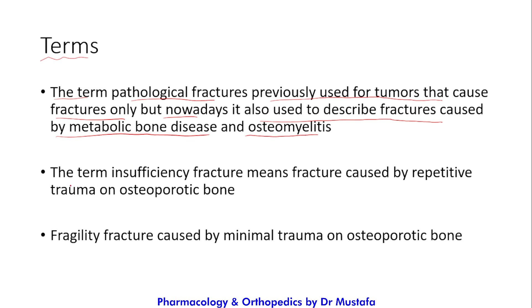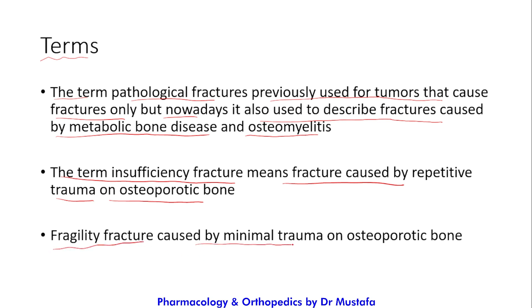The term 'insufficiency fracture' means a fracture caused by repetitive trauma on an osteoporotic bone, while 'fragility fracture' refers to a fracture caused by minimal trauma on an osteoporotic bone.